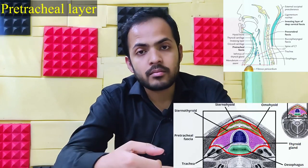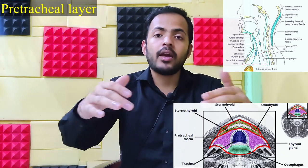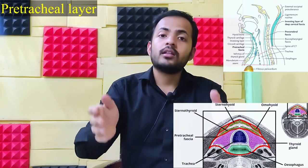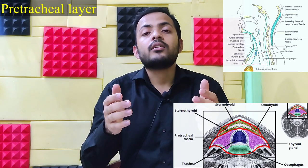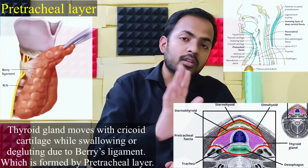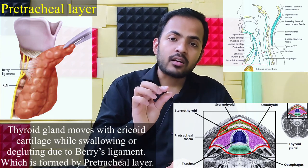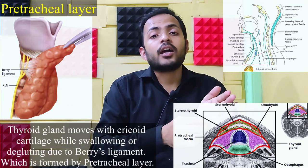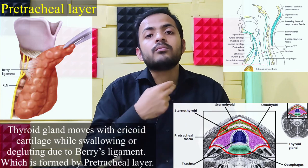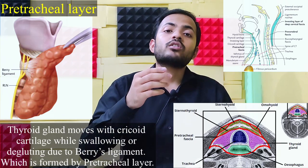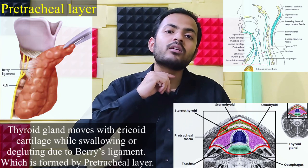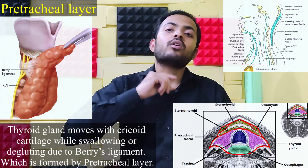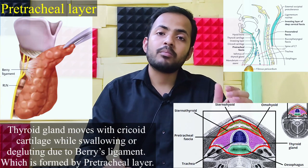The visceral layer has two parts: the pre-tracheal layer and the buccopharyngeal layer. The pre-tracheal layer splits and encloses the thyroid gland, trachea, and esophagus, as you can see in the photo. While covering the thyroid gland, the pre-tracheal layer forms Berry's ligament in the posterior part of the thyroid gland. One end attaches to the posterior part of the thyroid gland and the other end attaches to the cricoid cartilage. That is why when we swallow, the cricoid cartilage moves upward and downward, and along with it the thyroid gland also moves upward and downward.